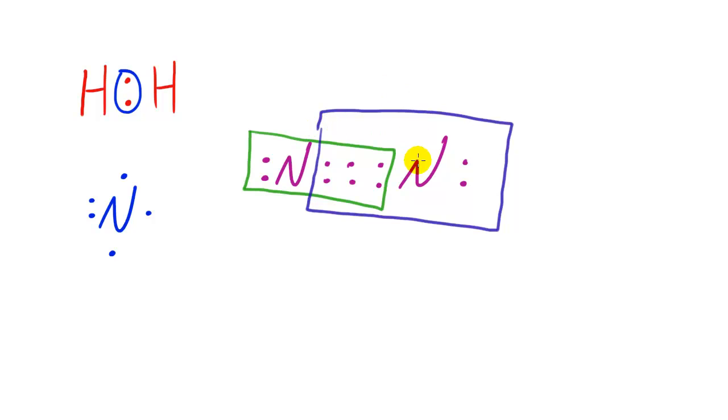So now if you take a look, this nitrogen right here has eight: it shares six, or three pairs, and has two of its own. This nitrogen over here also has two of its own and it's sharing these six electrons. Remember, whenever you have a pair of electrons that are shared, it's called a covalent bond. So since you have three pairs—two, four, six—this is called a triple covalent bond.